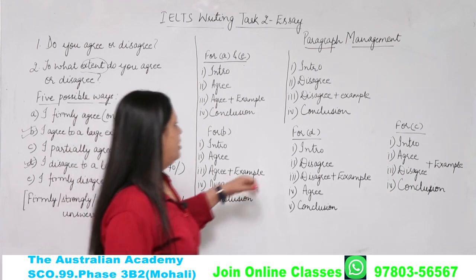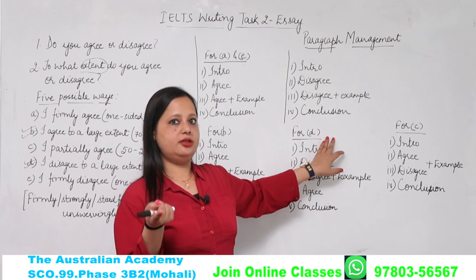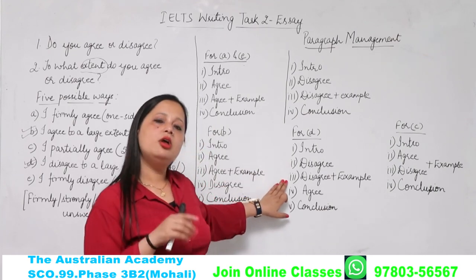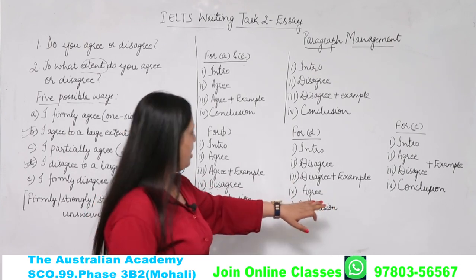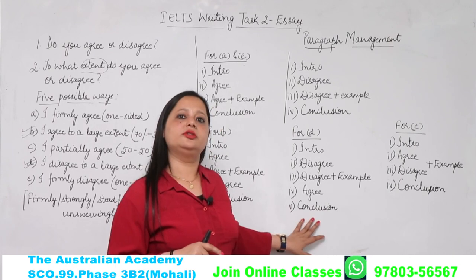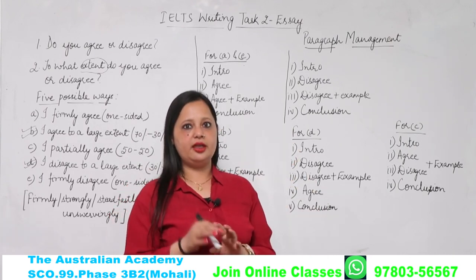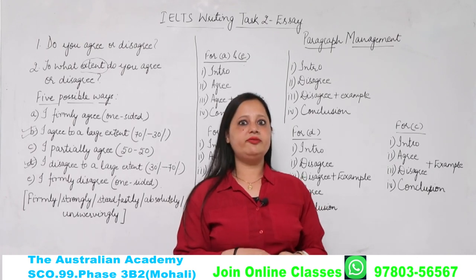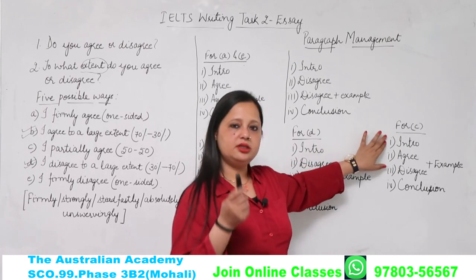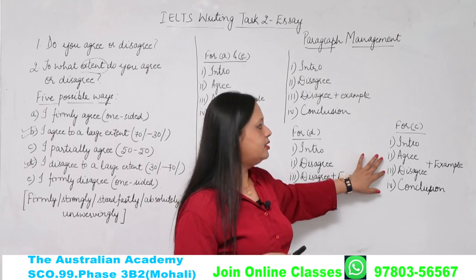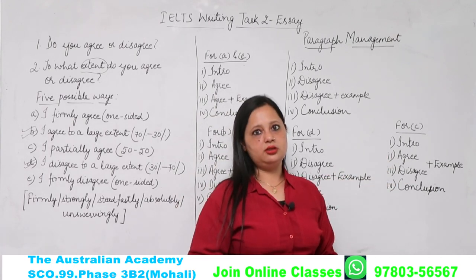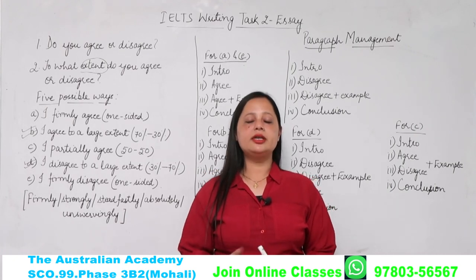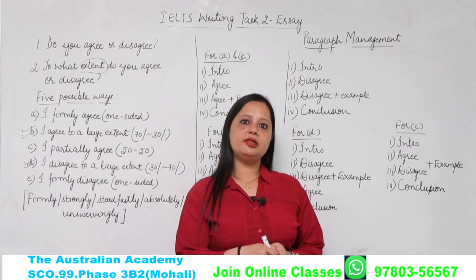Conclusion mein kahin na kahin ja ke dono ko balance kar dena hai. Then for D — large extent disagree: introduction, second aur third do paragraphs disagree ke banane hain kyunki disagree ke liye zyada points hain, unhi ka example denge, fourth paragraph agree ka banayenge, aur last conclusion. Agree neeche hi likhna hai kyunki uske thode se points honge. Aur agar agree aur disagree dono ko fifty-fifty likhna hai — C — toh: first introduction, ek paragraph agree ka, ek paragraph disagree ka, aur last conclusion. Jab agree aur disagree dono ka ek-ek paragraph ban raha hai, example dena aap ki choice hai — agree mein bhi de sakte hain, disagree mein bhi de sakte hain.